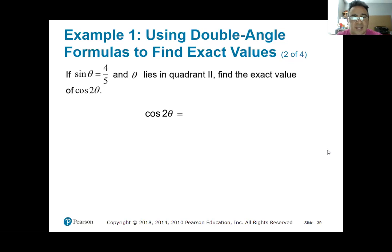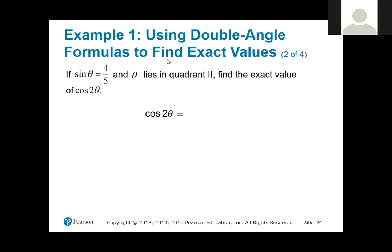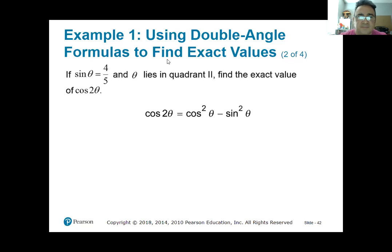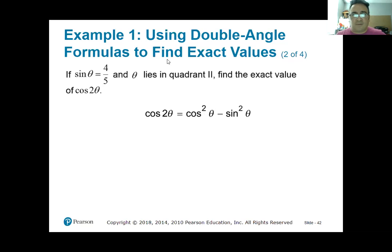Let's look here. Cosine of 2 theta — what is the formula? Cosine squared theta minus sine squared theta. They told us the information already; we could just plug in the values. But in general, if we didn't have the information, there's a triangle to be drawn, then find the information. You already have what sine is and what cosine is, so it's just a matter of plugging in and solving.